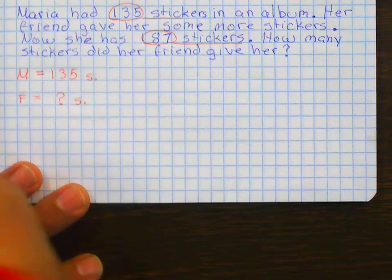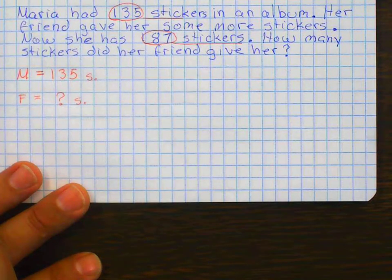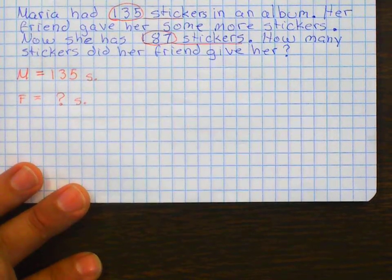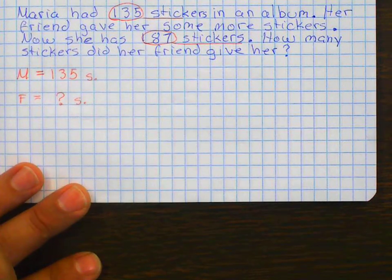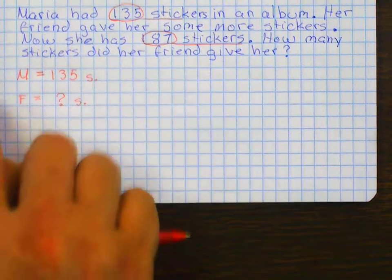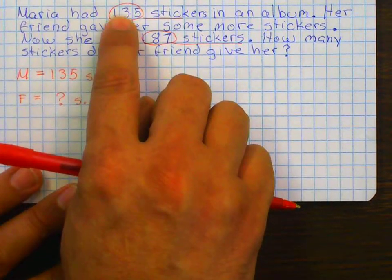How do you know it's the total? Because if you add— Don't tell me if you add. I don't know that yet. How do I know that's my total? Now she has. Exactly, because now she has 187. And if you notice, that's more than what she had before.